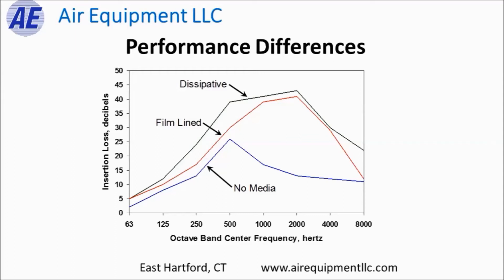The left-hand vertical column shows insertion loss in decibels — how much noise energy is absorbed from the airstream as it passes through the silencer. The higher the number, the better it's working. The dissipative silencer attenuates the most noise energy across the spectrum at every frequency. The film-lined type still attenuates a fair amount but not quite as much. The no media silencer attenuates the least. It's critical to analyze the entire application to select the right silencer that will achieve your target noise level in the space.